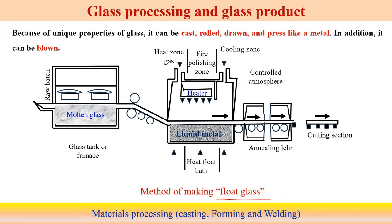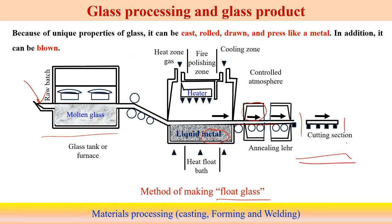In general, float glass is prepared like this: the raw batch is put inside and molten glass is created using furnace heating. After that, it is transferred through a rolling operation, creating a liquid metal form. Using heaters with controlled atmosphere during the cooling phase, the final flat surface shape is formed and then cut into different pieces. This is the typical procedure for making float glass.